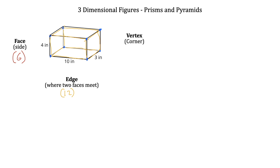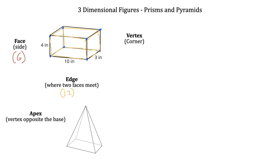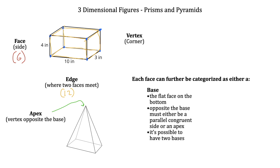Another common three-dimensional shape uses something called an apex. We don't have an apex in the top shape, but we would have an apex in this one — that apex is just that point opposite the base, so it's a special kind of vertex. That brings up another term: base. Each face can be categorized as either a base or a lateral face. To figure out which one is the base, you want to find the flat face on the bottom; however, the opposite side of the base must either be a parallel congruent side or an apex.